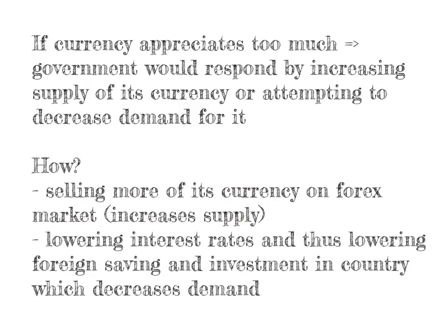If the currency appreciates too much, the government could respond by increasing the supply of its currency on the foreign exchange market, or attempting to decrease demand for its currency. The government could sell more of its currency on the foreign exchange market, which increases the supply and causes it to depreciate. Or the government could lower interest rates, lowering foreign saving and investment in the country, which decreases demand for its currency. So the government can either manipulate the supply of its currency or manipulate interest rates to achieve that goal.